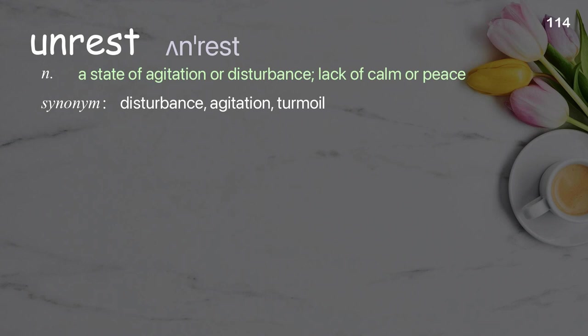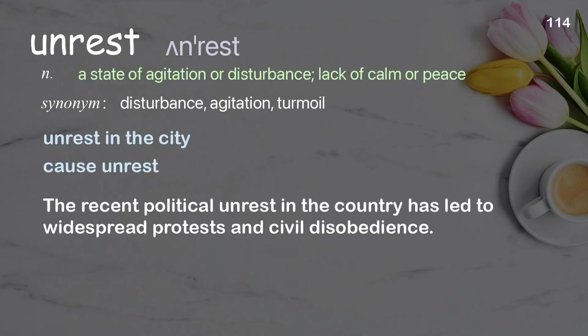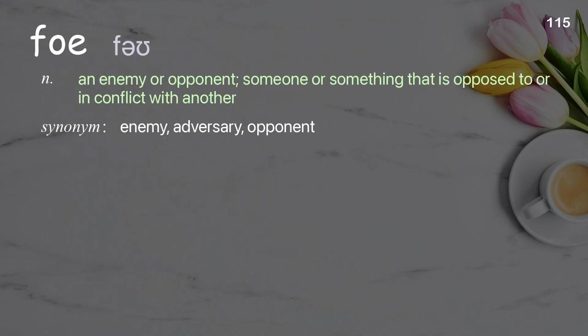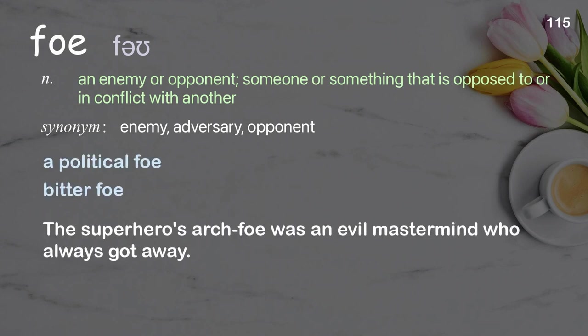Unrest: a state of agitation or disturbance; lack of calm or peace. Examples: unrest in the city, cause unrest. The recent political unrest in the country has led to widespread protests and civil disobedience. Foe: an enemy or opponent; someone or something that is opposed to or in conflict with another. Examples: a political foe, bitter foe. The superhero's arch-foe was an evil mastermind who always got away.